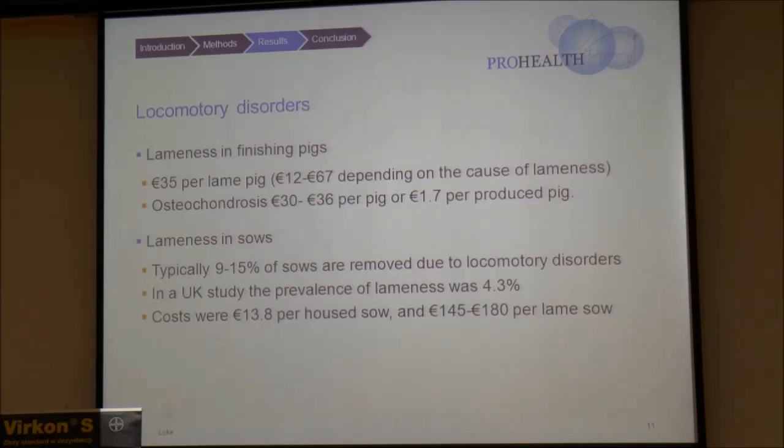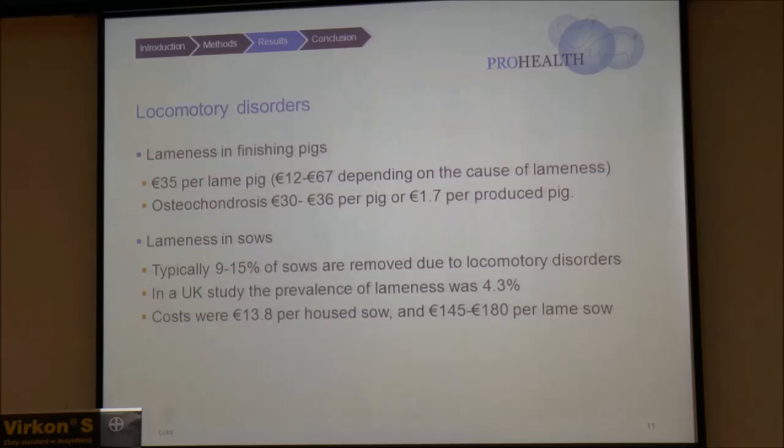Lameness is quite important and common. The costs associated with lameness in sows were about 13.8 euros per housed sow, or about 145 to 180 euros per lame sow. So if lameness takes place in a sow, the cost for that individual pig in monetary terms can be quite huge.